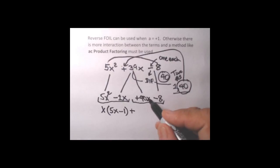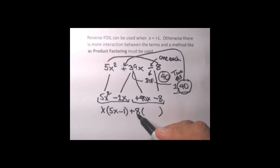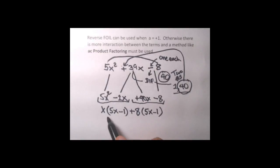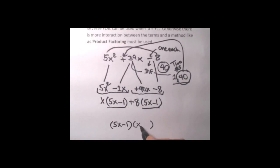The GCF was 8, so now let's get the leftovers. What do you multiply plus 8 by to make plus 40x? That's 5x. What do you multiply plus 8 by to make negative 8? That's negative 1. So after factoring, the two quantities in parentheses are alike — both are 5x minus 1. That means we can factor this once more: factor out the GCF, which is 5x minus 1. Then the leftovers make up the second binomial: x plus 8.